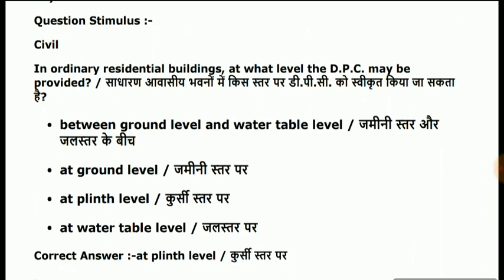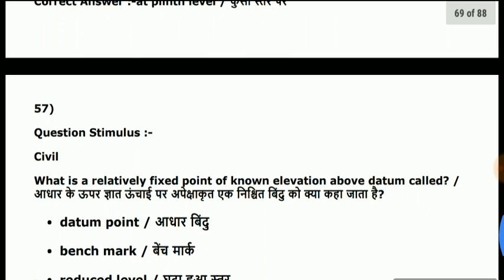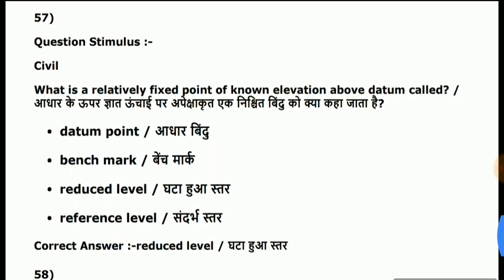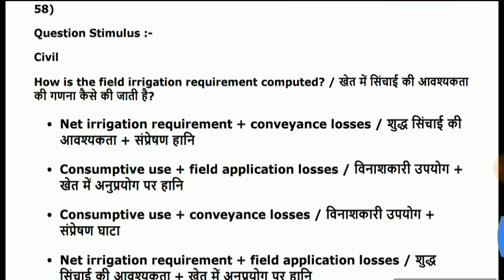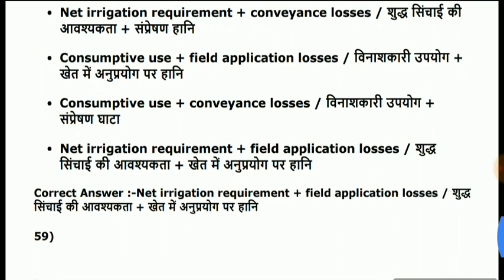Question 56: in an ordinary residential building, at what level may the DPC be provided? Answer is at plinth level. Question 57: what is a relatively fixed point of known elevation above datum called? Answer is reduced level. Question 58: how is the field irrigation requirement computed? Answer is net irrigation requirement plus field application losses.